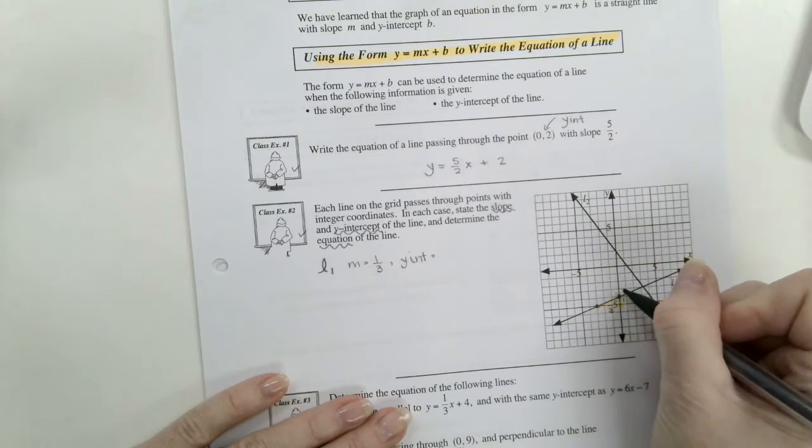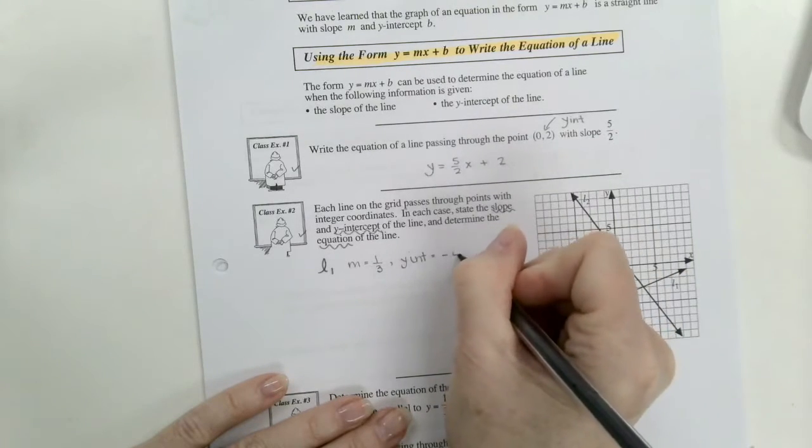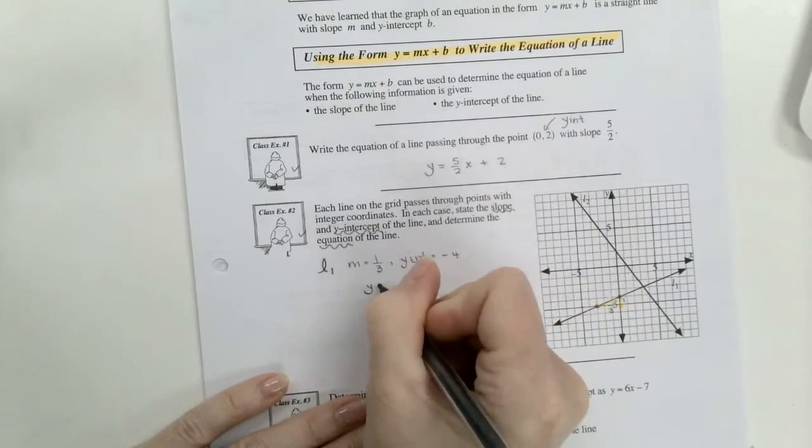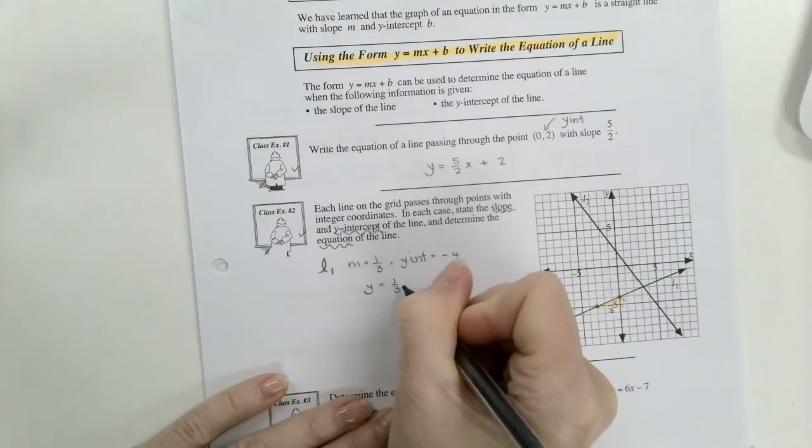Yes, negative 4. So our equation, y equals 1 third x, take away 4.